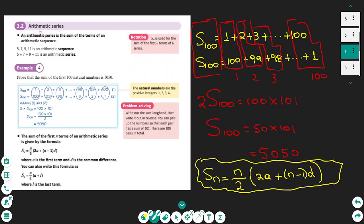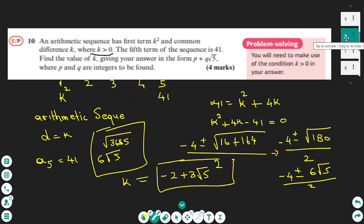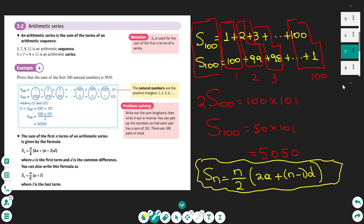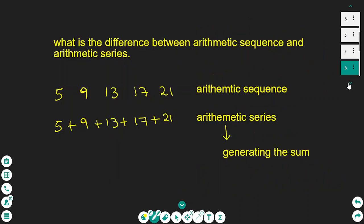Now let's move to arithmetic series. An arithmetic series is the sum of the terms of a sequence. The key difference: an arithmetic sequence is just numbers that follow a pattern, while an arithmetic series is the addition of those numbers — it generates a running sum of the terms.